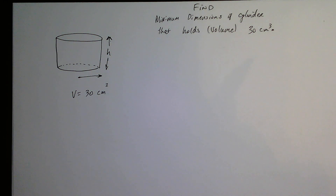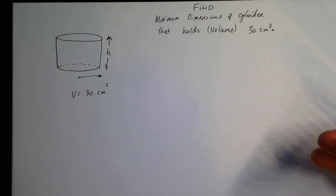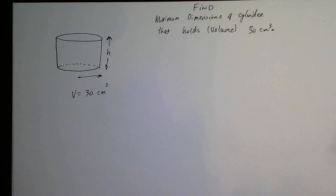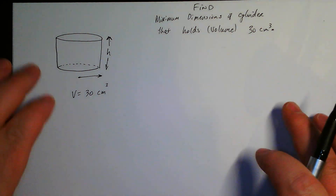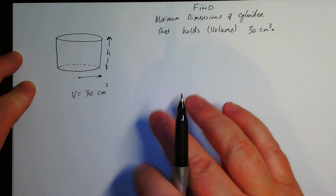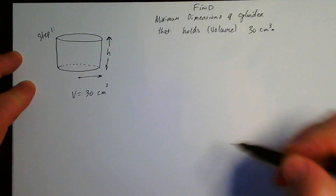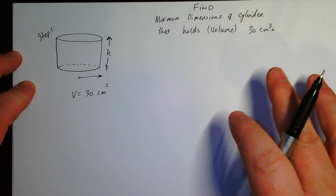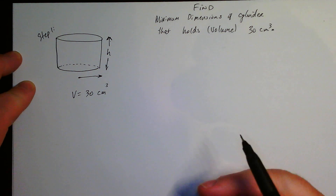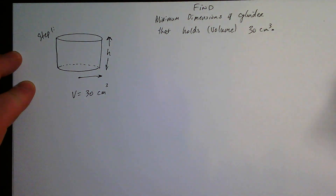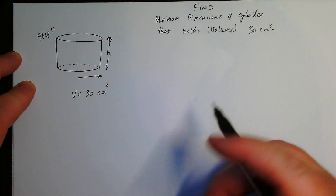Let's do a little optimization problem. We've got a cylinder and we need to know what are the minimum dimensions that will hold 30 cubic centimeters. Your very first step is you want to draw a picture — you want to make sure you visualize this and get it solid in your head. Maybe if you've done it a thousand times you don't need to, but absolutely draw it out first.